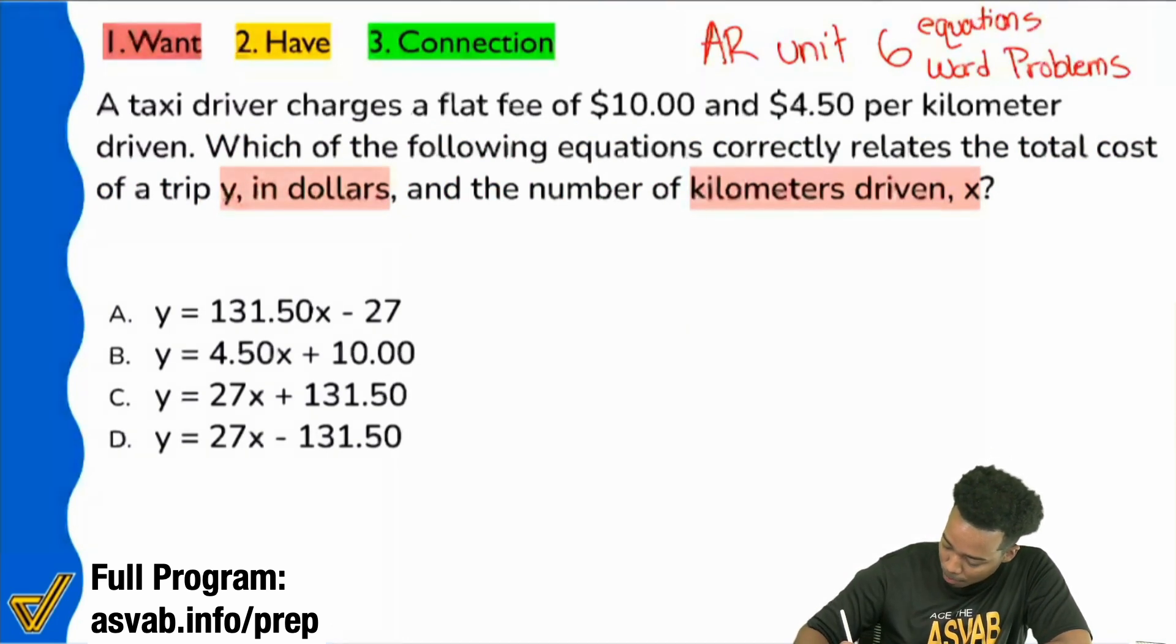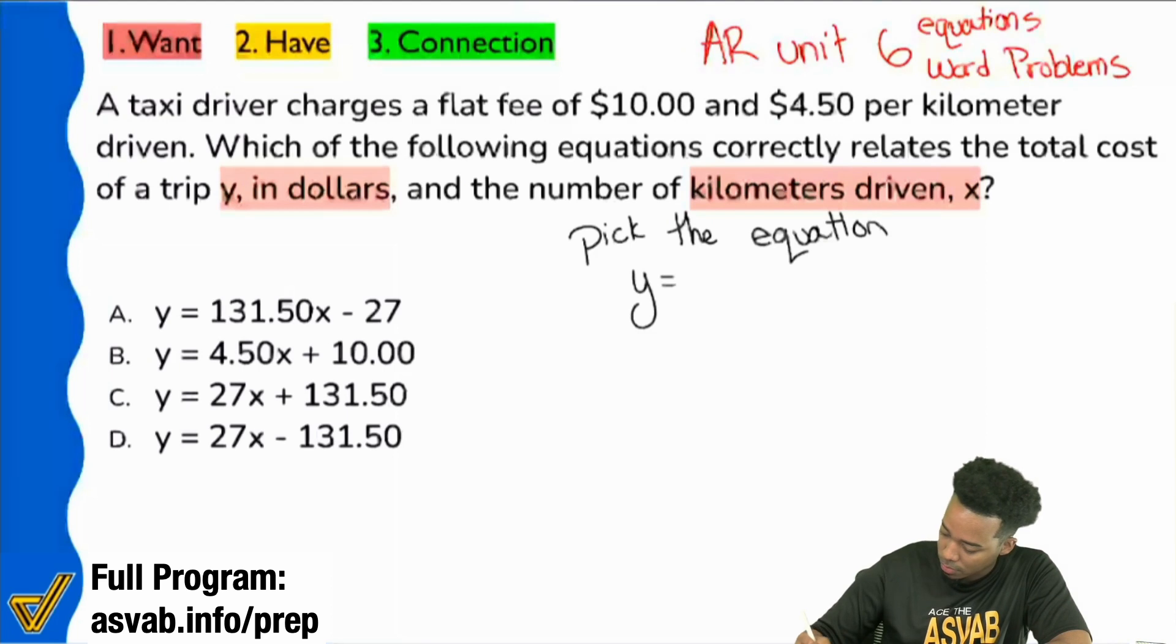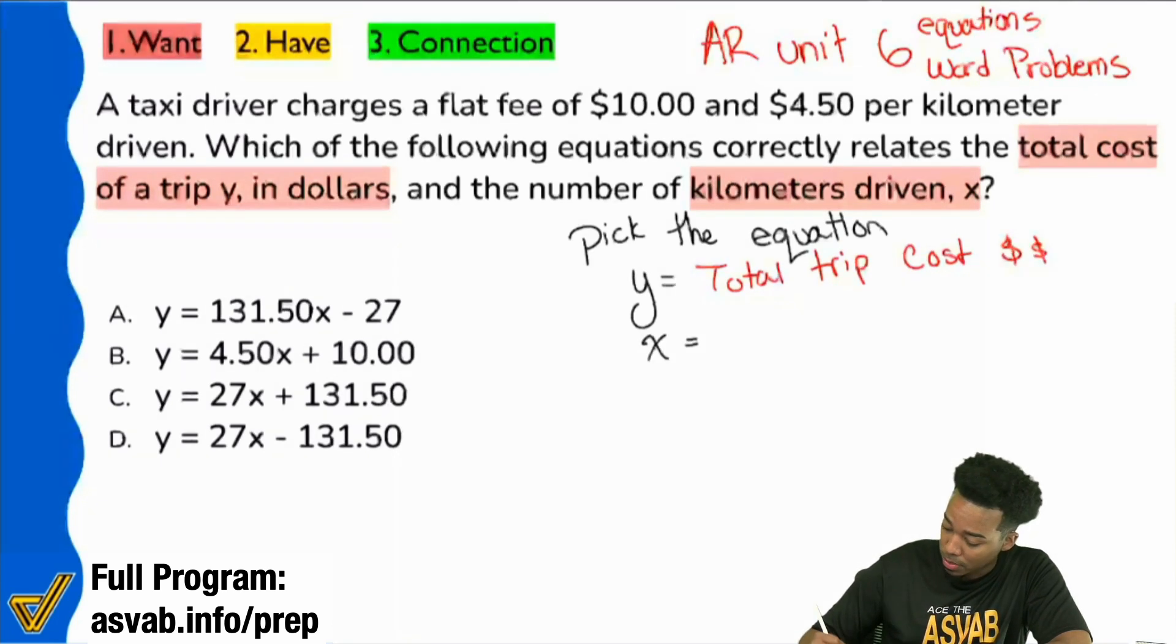Y represents dollars and x represents the kilometers driven. So I'm going to write that down for you. Basically, we want to pick the equation, and they already tell you that y equals, again, total cost of the trip. Y in dollars. So that's total trip cost. And then x is going to be the kilometers driven.